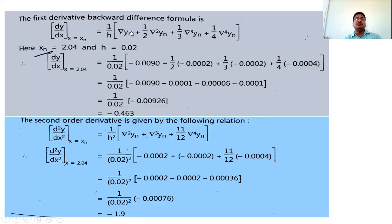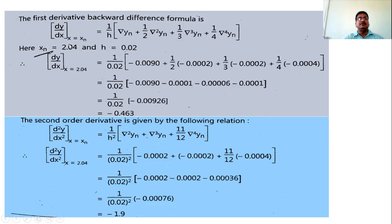Write the two formulas to obtain first and second order derivatives using the backward difference formula. The formula is: dy/dx at x = xₙ equals (1/h)[∇yₙ + (1/2)∇²yₙ + (1/3)∇³yₙ + (1/4)∇⁴yₙ], with all terms positive. No further terms are needed since ∇⁵ and higher differences are zero. Here xₙ = 2.04, and h = 0.02 (the common difference between x values).